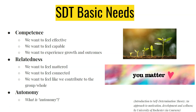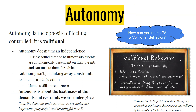Competence means we want to feel effective, we want to feel capable, and we want to experience growth and outcomes. Relatedness refers to the idea that we want to feel like we mattered, we want to feel connected, and we want to feel like we contribute to the group or the whole. Let's focus a little more on autonomy. Autonomy is the opposite of feeling controlled. Autonomy is volitional — volitional behavior means to do things willingly, out of interest and enjoyment, and because we see value in them and understand their worth. So how can we make physical activity a volitional behavior?